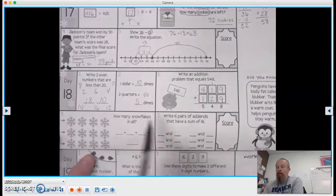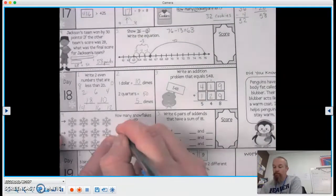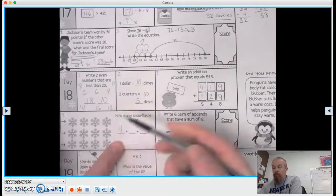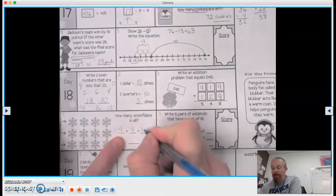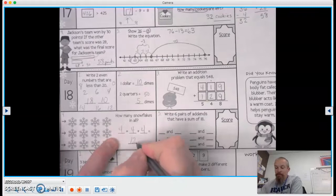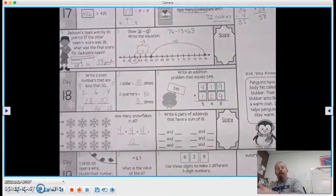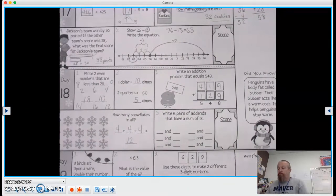Or how many snowflakes in all? Well, what plus what plus what? 4 plus 1, 2, 3, 4 plus 1, 2, 3, 4 equals 12 snowflakes. 4, 8, 12.